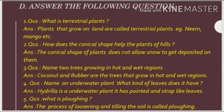First question is: what are terrestrial plants? Answer: plants that grow on land are called terrestrial plants. For example, neem and mango. Then leave one line blank.